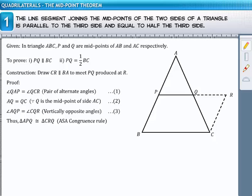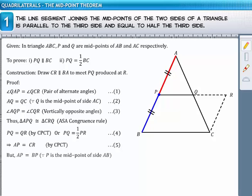Now, since the corresponding parts of congruent triangles are equal, PQ is equal to QR or PQ is equal to half of PR. Also, AP is equal to CR. But AP is equal to BP since P is the midpoint of the side AB. This implies BP is equal to CR.